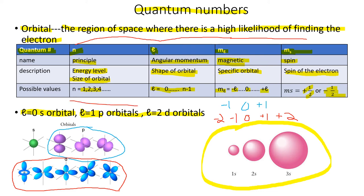N is like the town — the most general. L is like the street — more specific. M-sub-l is like the specific house. M-sub-s is finally talking about the individuals in that house. Each quantum number describes something specific, and those values have meaning because they can determine what other quantum numbers might be.